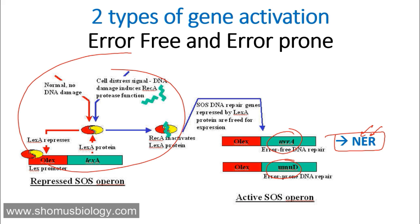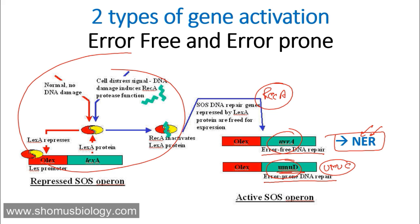UMU is involved in error-prone DNA repair. So there are two types of gene activation done after the activation of RecA protein: because RecA destroys LexA, UVRA is produced and UMUD is produced. UVRA is involved with error-free DNA repair, like Nucleotide Excision Repair, which restores the DNA completely to its normal state. While UMUD and UMUC — and UMUD' — are the protein components whose association together is involved in a pathway known as error-prone DNA repair, because their pathway does not restore the original structure of the DNA and sometimes continues with errors even after the DNA repair. They will do the repair, but it will not be 100% foolproof, and it may still carry some portions of damaged DNA.